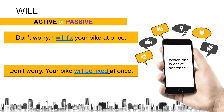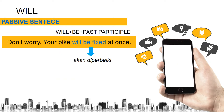The first sentence is the active sentence, because 'will fix' means 'akan memperbaiki' in Bahasa Indonesia. In the second sentence, the words 'will be fixed' means 'akan diperbaiki.' So the second sentence — 'Don't worry, your bike will be fixed at once' — is the passive sentence, where 'will be fixed' means 'akan diperbaiki' in Bahasa Indonesia.